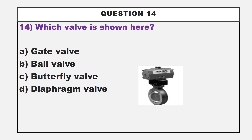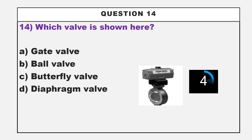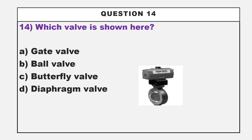In this question, there is a figure given. The question is: which valve is shown here? Option A: gate valve. Option B: ball valve. Option C: butterfly valve. Option D: diaphragm valve. The given figure shows the butterfly valve, so the correct answer is option C, butterfly valve.